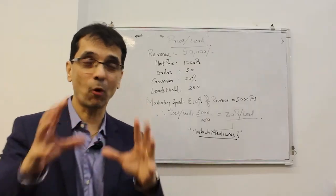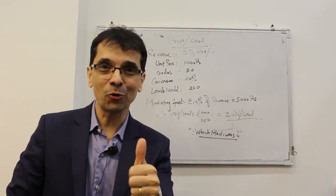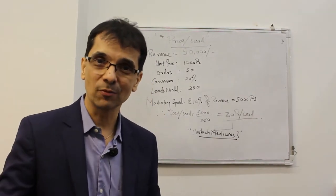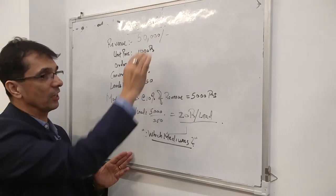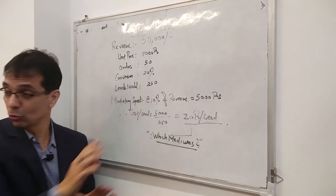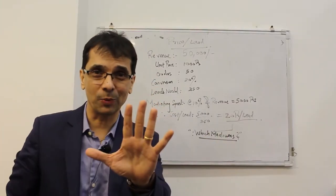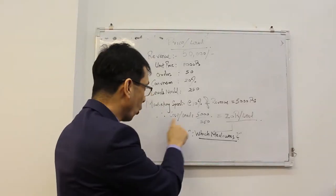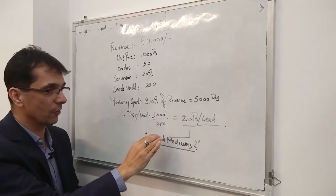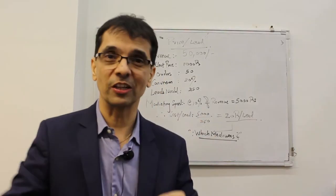Now the point is, do you know what you need to do to get 250 leads? Number one thing you need to know is what is your marketing spend. I've assumed if your marketing spend is 10% of the expected revenue, you get 5,000 rupees. So you have 5,000 rupees to get 250 leads. What is the cost per lead? Very simple: 5,000 divided by 250 equals 20 rupees a lead.